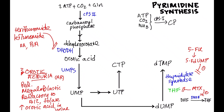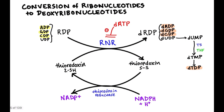That's what you need to know for pyrimidine synthesis. As for converting ribonucleotides to deoxyribonucleotides, it's not super important to know this pathway in great detail, but do know that ribonucleotide reductase is responsible for taking ADP, GDP, and CDP — which would be used in RNA — and converting them into their deoxy forms.